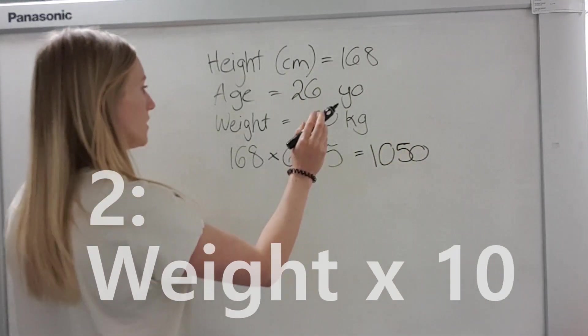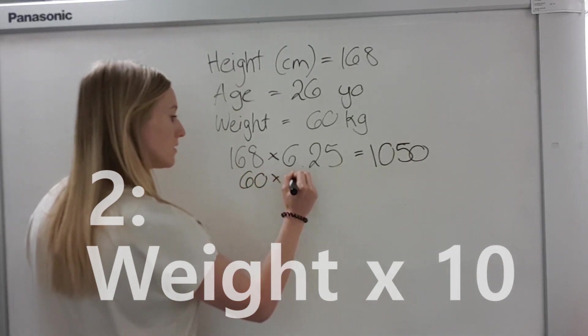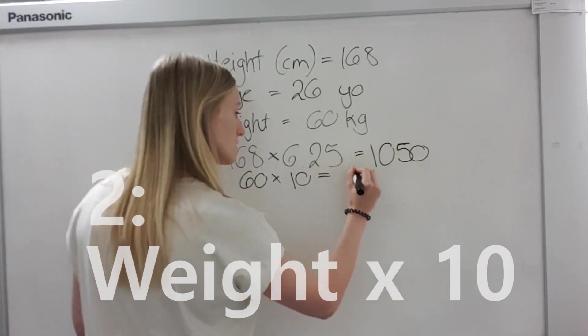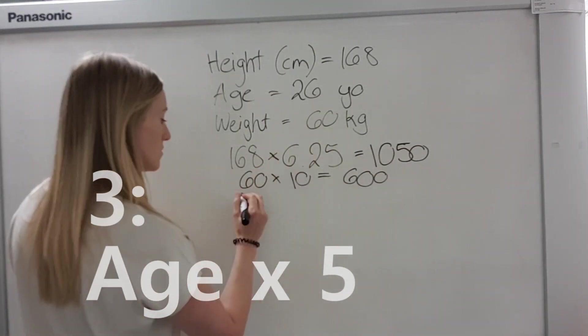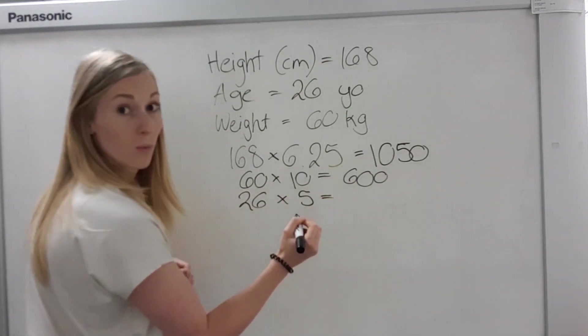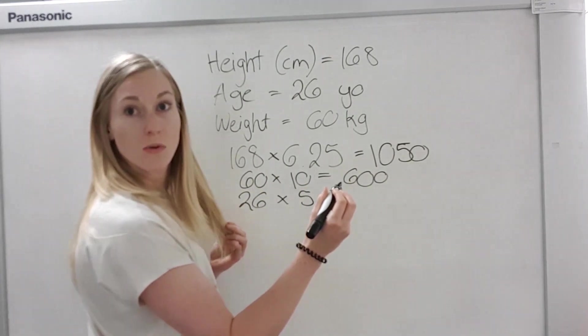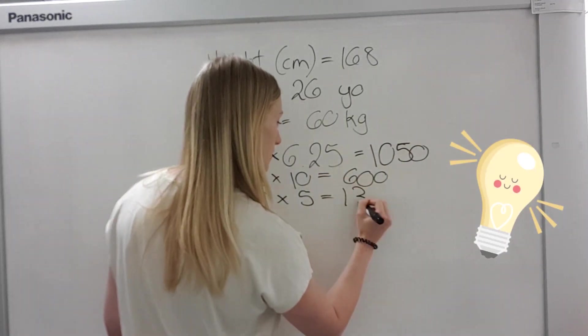My weight times 10, so you do your weight times 10, like 600. Our age times 5. So my age, which is 26 times 5. So my age, which is 26 times 5, which is, where is it? 130. Okay, 130.